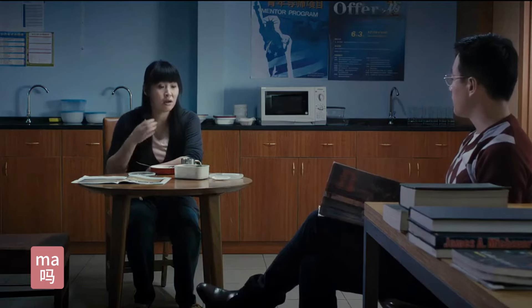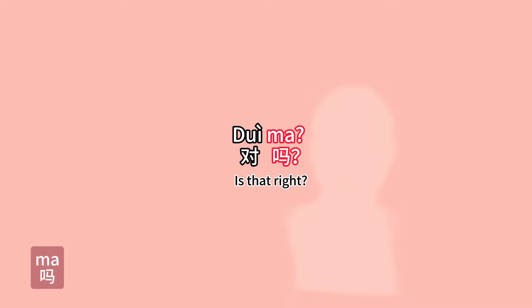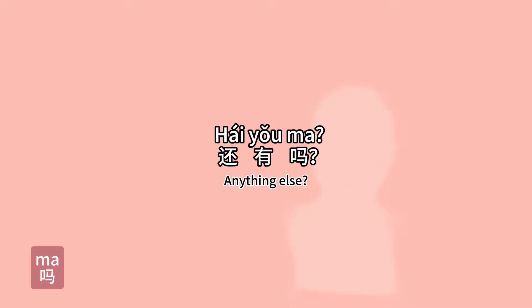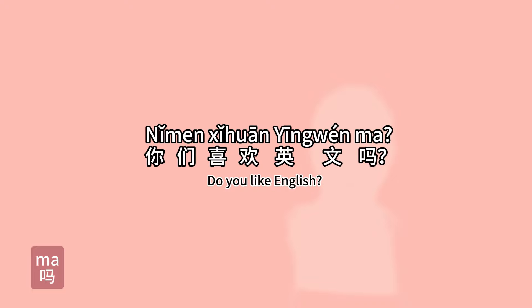Number five: 吗. 对吗? 有意思吗? 没饭还有吗? 那你们喜欢英语吗? 语气词 吗 is part of a questioning tone as we know it. Examples: 对吗? 有意思吗? 你们喜欢英文吗?